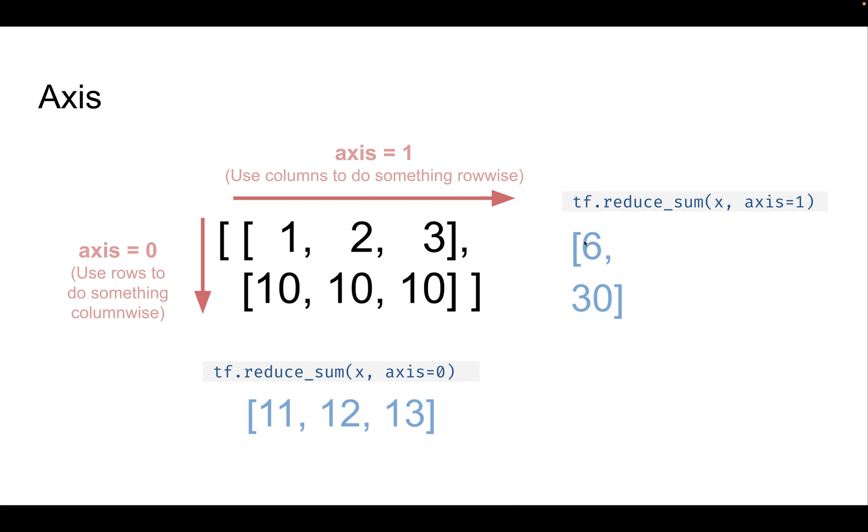And vice versa, if we are looking at axis 1, then we are adding the values in each of the rows. So we are doing something along each row and we are using the values in each of the columns. So 1 plus 2 plus 3 is 6, and then this is 30. So that's the general idea behind axes. And there can be more than two axes. There can be an infinite number of axes.